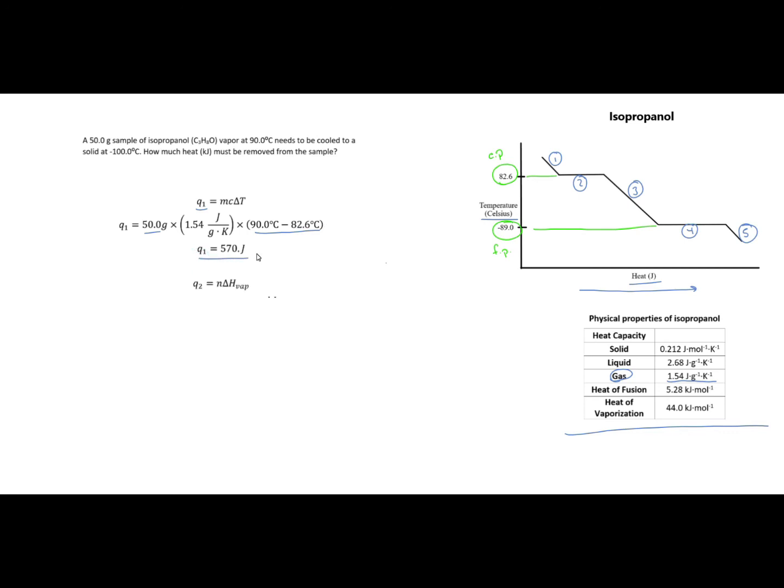On to Q2. In section 2 we are undergoing the condensation process. Our temperature is not changing. You can see that in the graph, that's why we have a horizontal line. So I cannot use Q equals MC delta T. I must use for Q2 my number of moles times my heat of vaporization. If I come back to my table, here is my heat of vaporization: 44.6 kilojoules per mole. I simply plug in my number of moles and I get a value for Q2: 36.6 kilojoules. Physically at this point I have liquid isopropanol at 82.6 degrees.